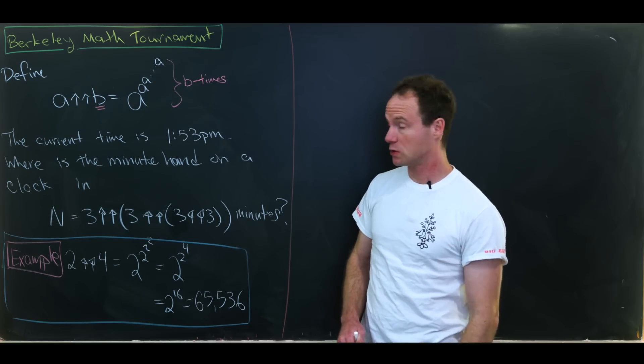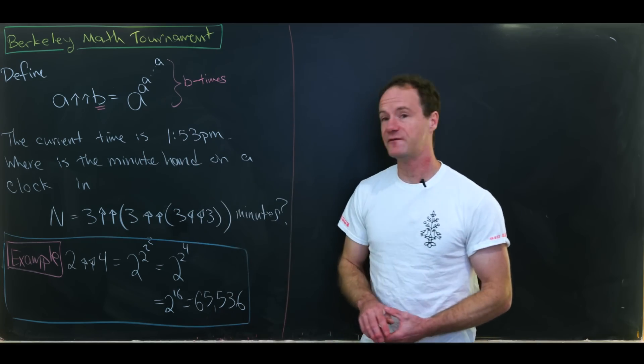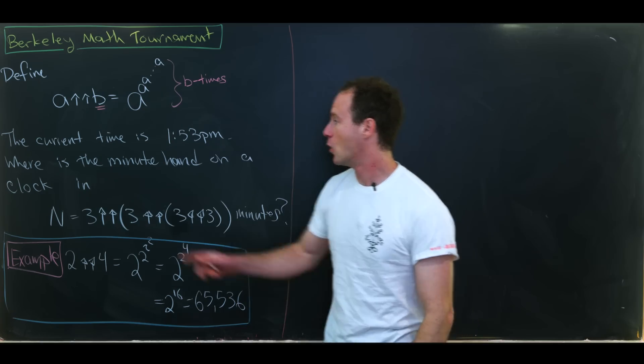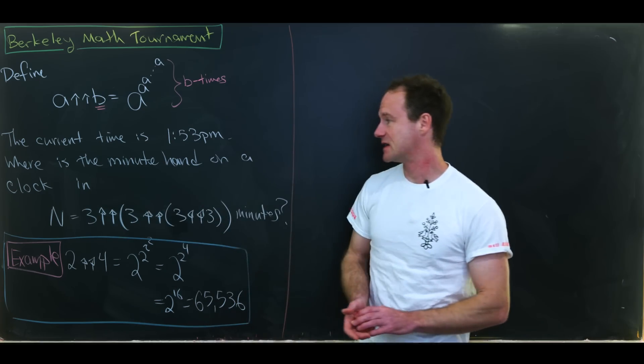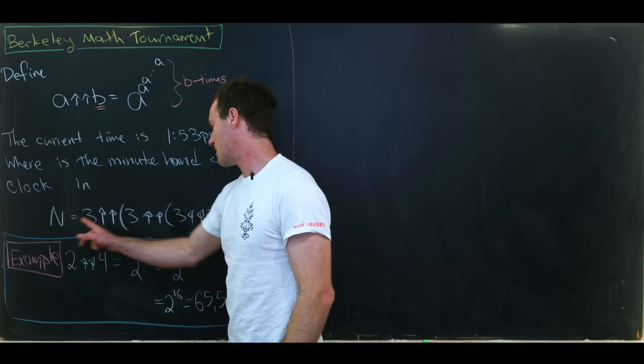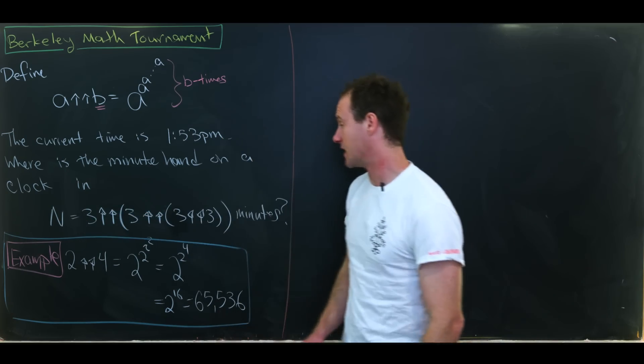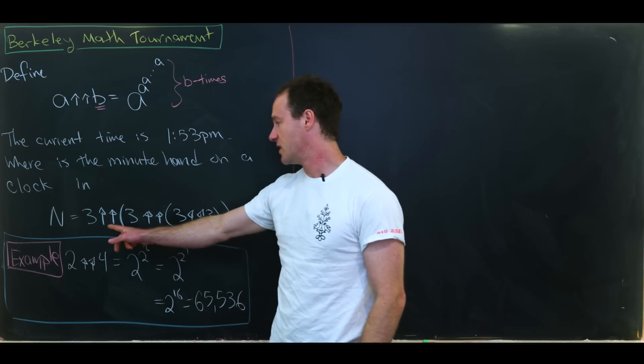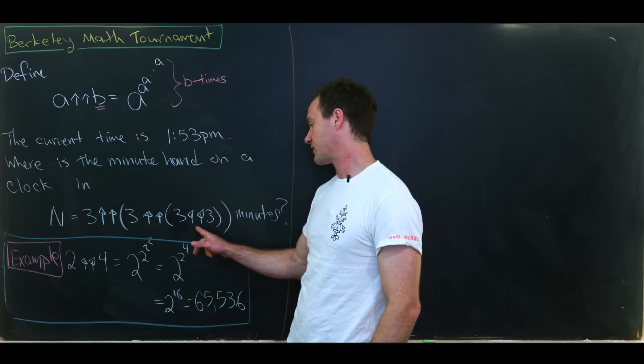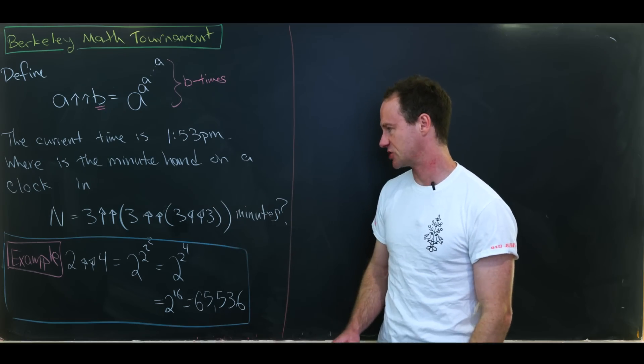And so our goal is the following. So the current time is 1:53 p.m. Where is the minute hand on a clock in this number of minutes? So let's see what we've got here. I've called the number capital N and we have three arrow arrow three arrow arrow three arrow arrow three with that nested parentheses action going on.